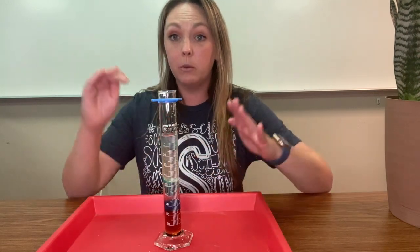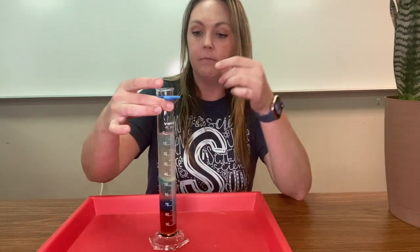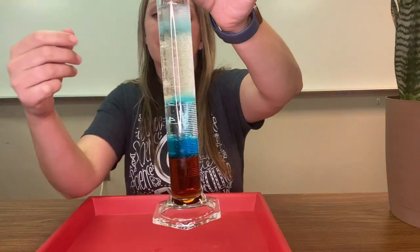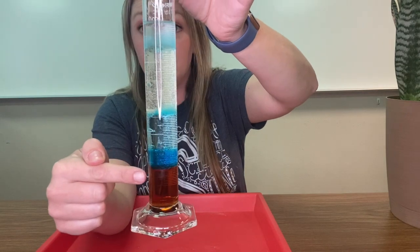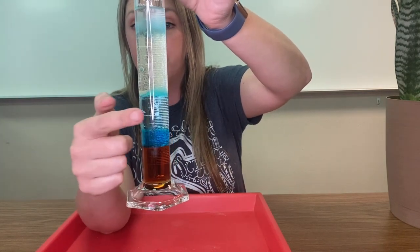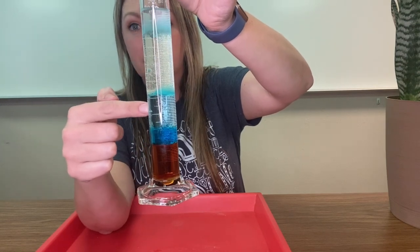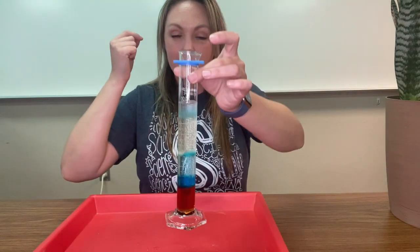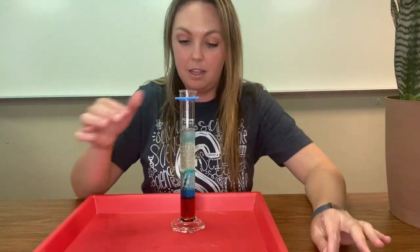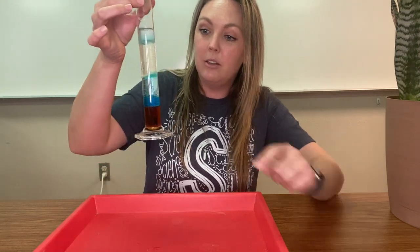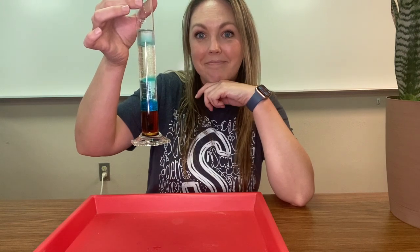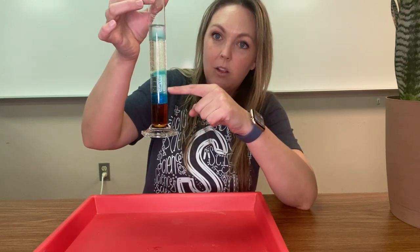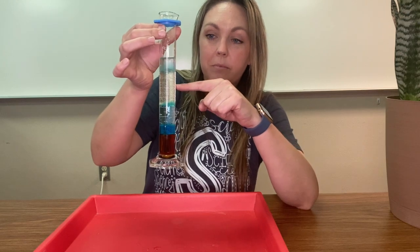Next, I have several different liquids poured into this glass graduated cylinder. Take a look. Down here at the bottom we have syrup. Here is dish soap. In the middle here, that's water. Above the water is vegetable oil and above that is rubbing alcohol.